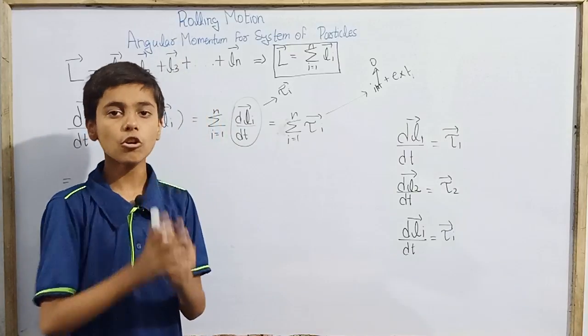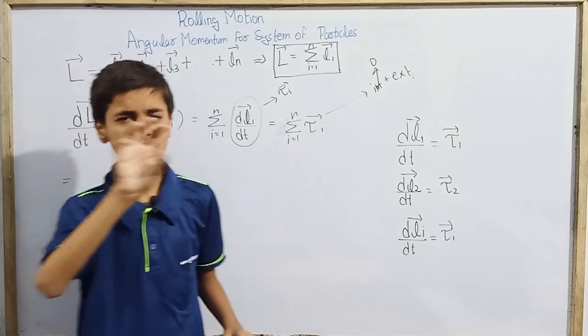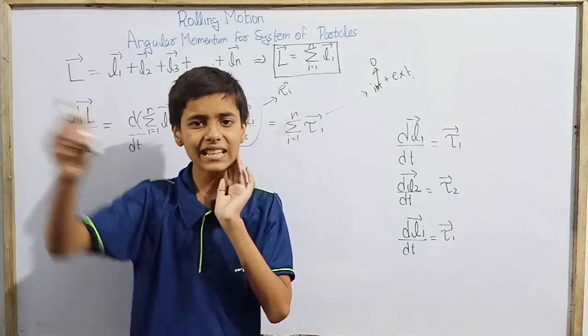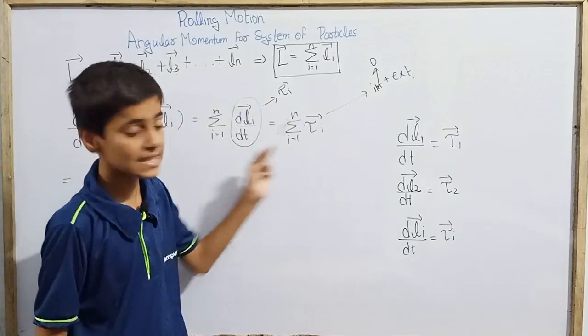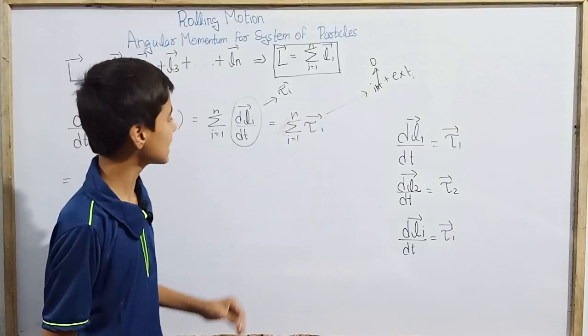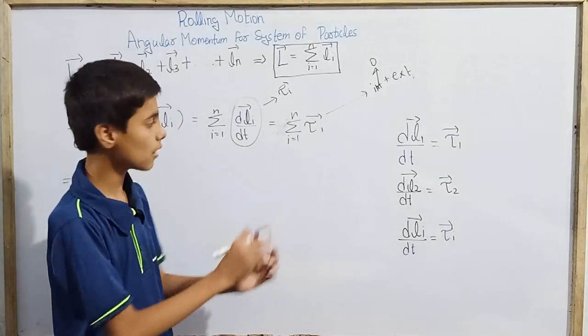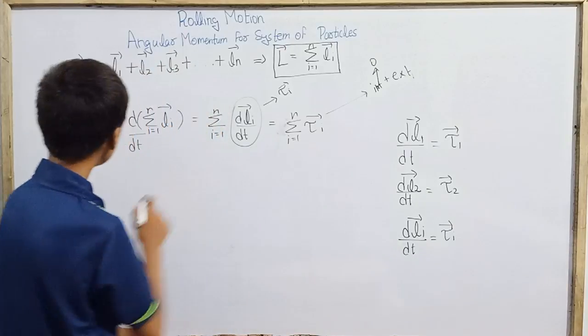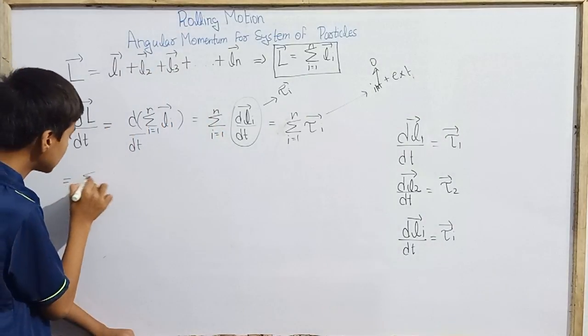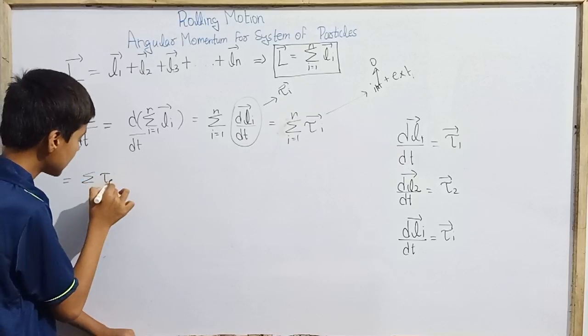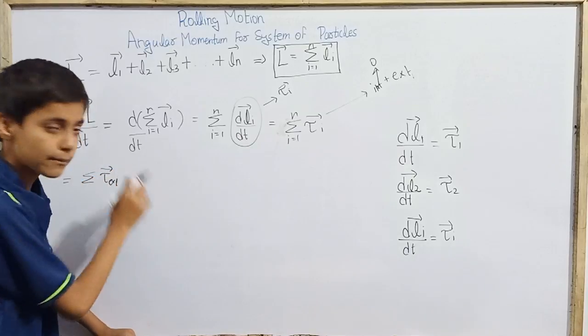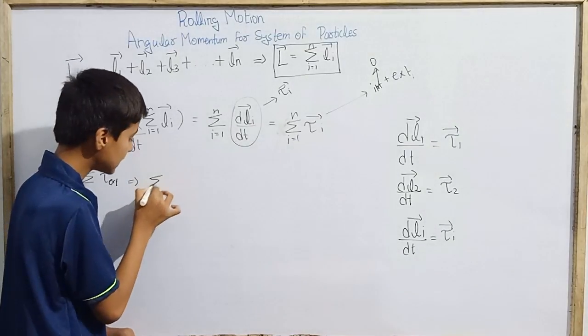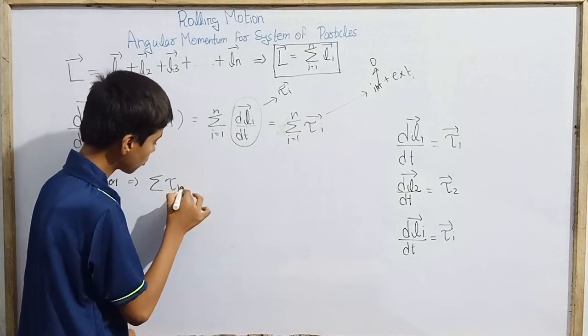The net internal torque is also zero. The external torques: another particle outside the system is applying force on this system. This system also applies force on that particle, but that is outside our system. For our system, we have to see how angular momentum is changing and how torque is applied. The external force will remain. So this is the external torque, the total sum of all external torques.